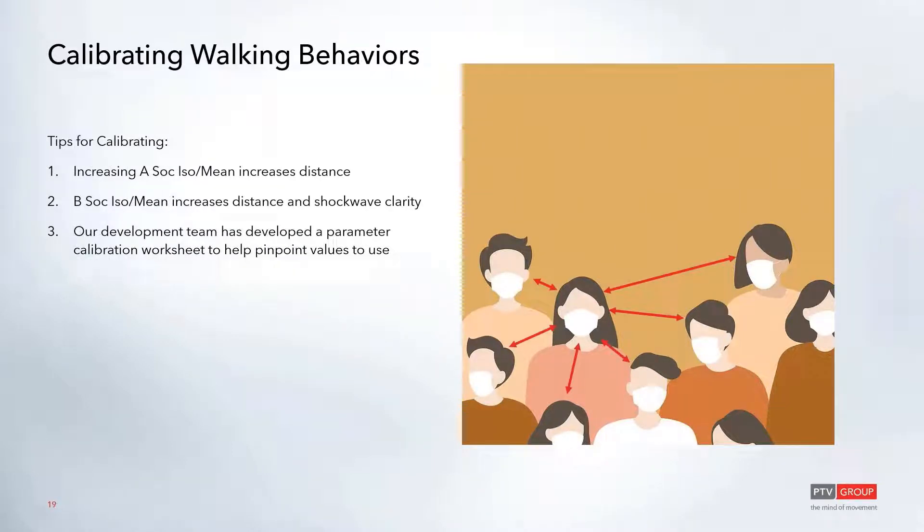Some tips for calibrating: remember that increasing the asocial parameters, either the isotropic or the mean, increases the general distances between people. This is the primary distance controlling factor. Increasing it or decreasing it has a lot of sensitivity. So small changes will go a long way. Increasing it will increase the distance between people, and thus decreasing the densities.